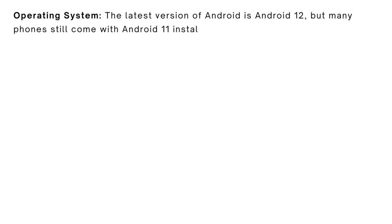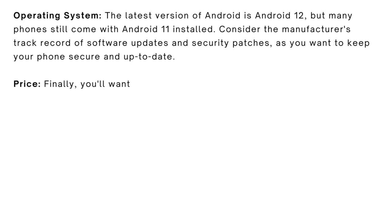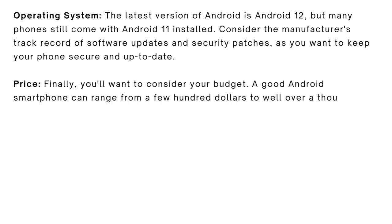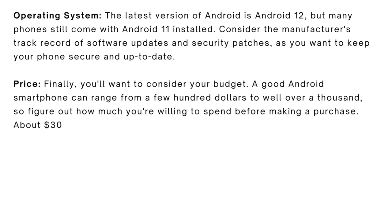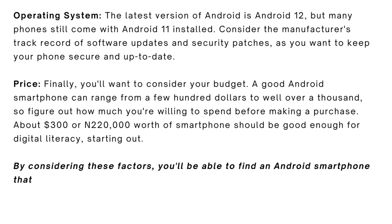For operating system, the latest version of Android is Android 12, but many phones still come with Android 11. Consider the manufacturer's track record of software updates and security patches to keep your phone secure and up to date. For price, a good Android smartphone can range from a few hundred dollars to well over a thousand. In Nigeria, about 220,000 naira should be enough to get started. When you consider all these factors, you'll be able to find an Android smartphone that meets your needs.